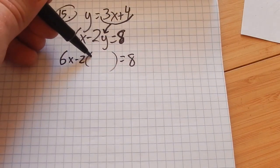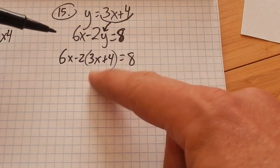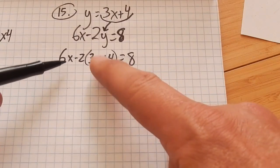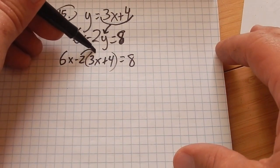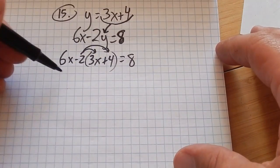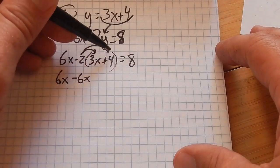So I'm going to substitute that. What I mean by that is y is equal to this 3x plus 4. That 3x plus 4 can just take the place of y. Notice this equation says 6 times x minus 2 times y equals 8. But y is just the same as 3x plus 4.